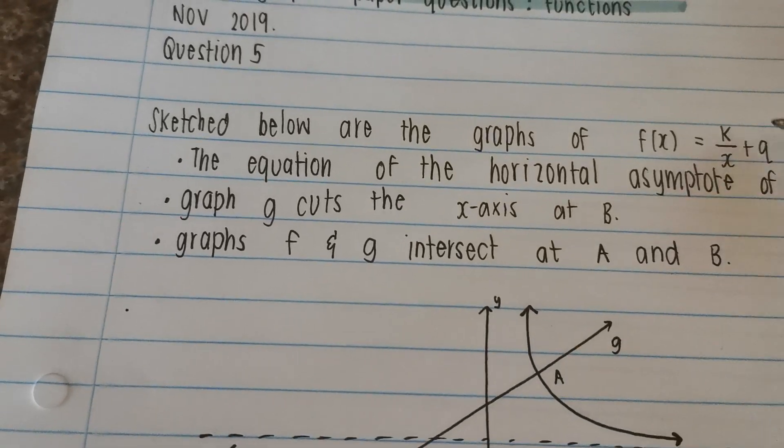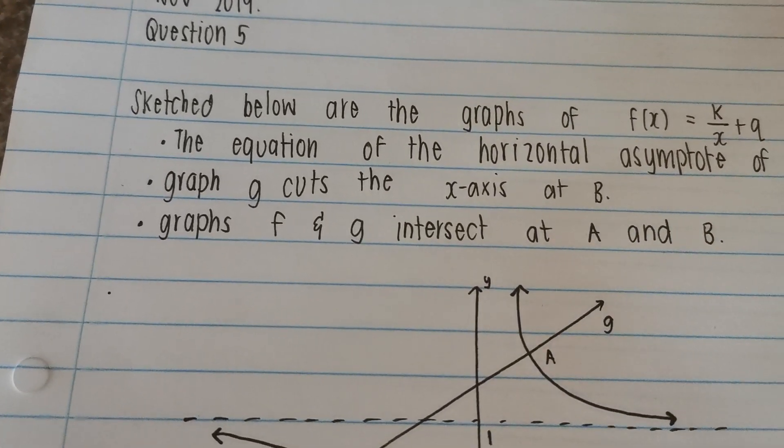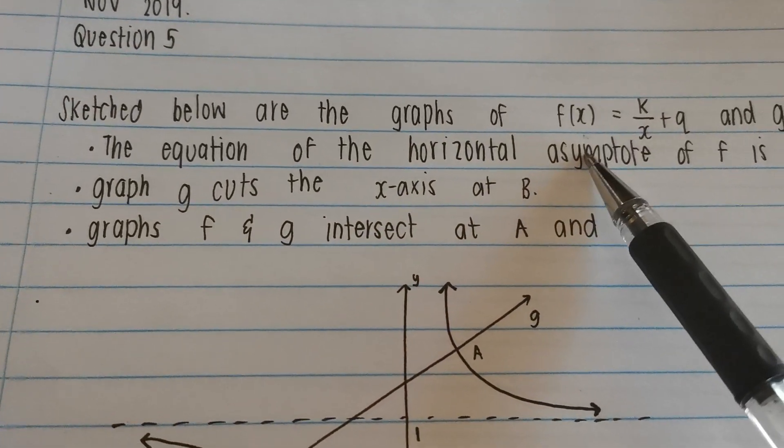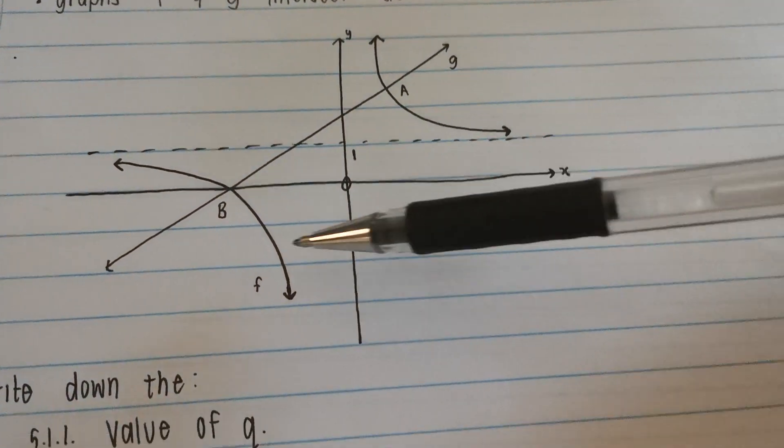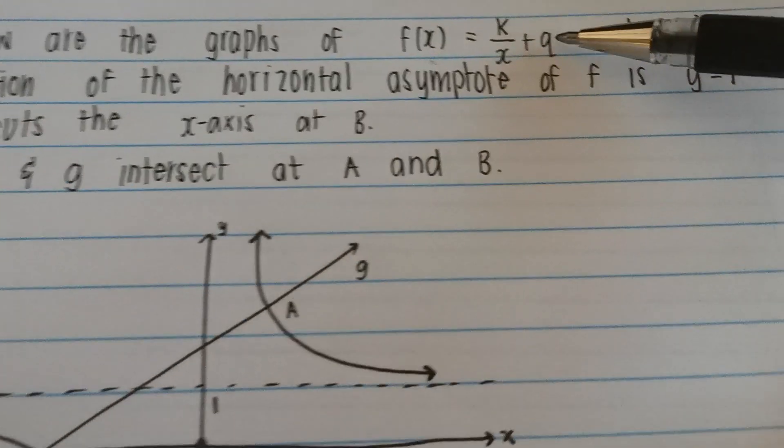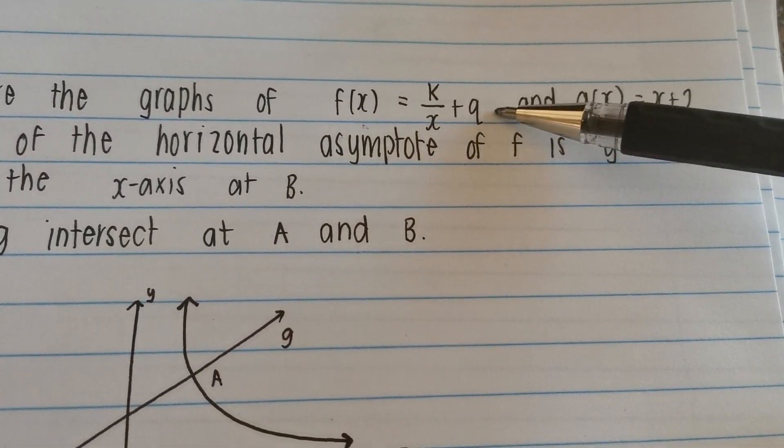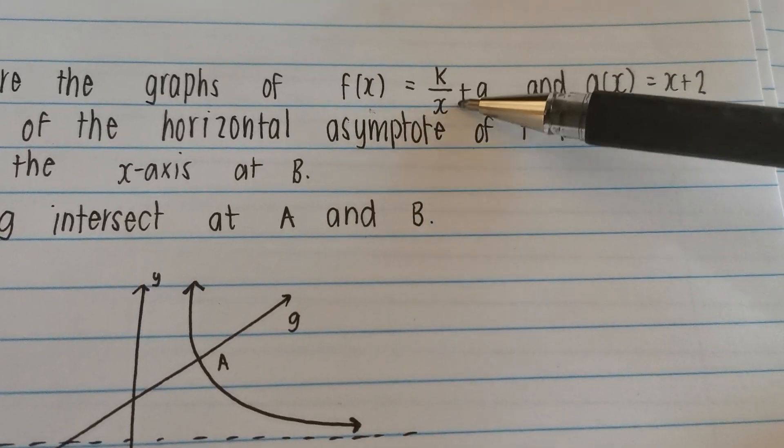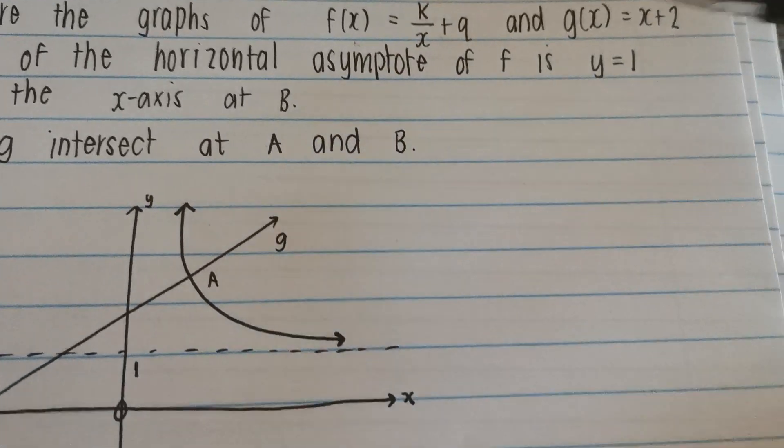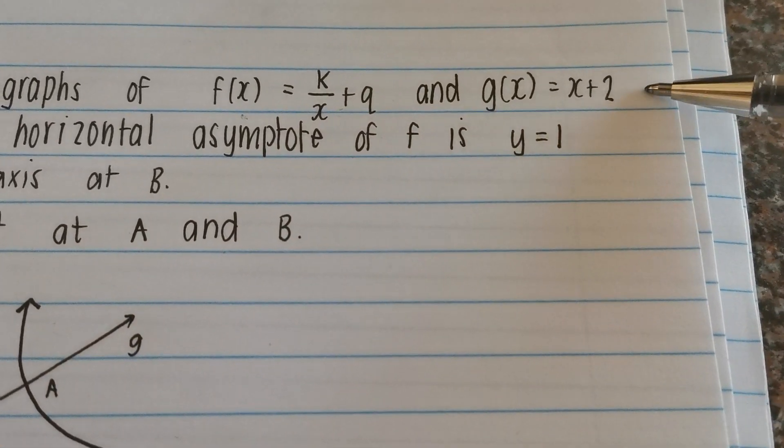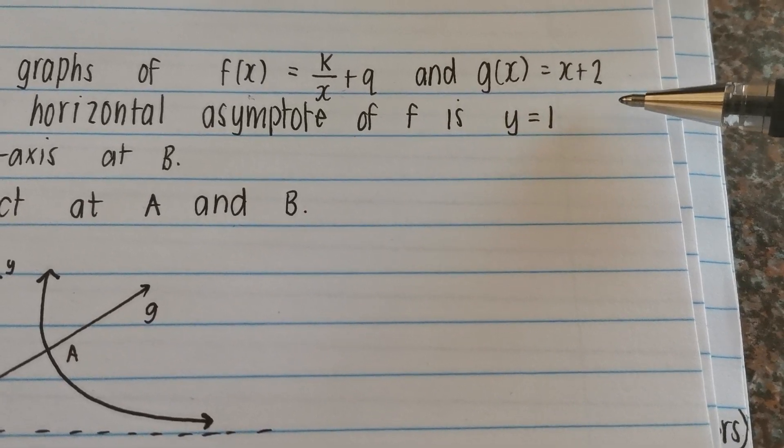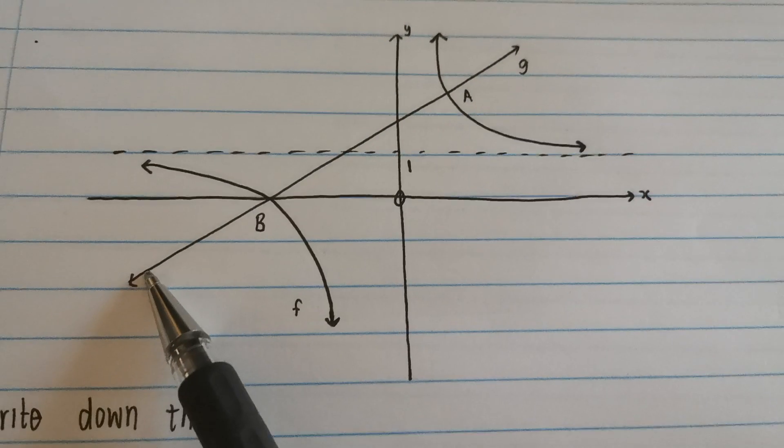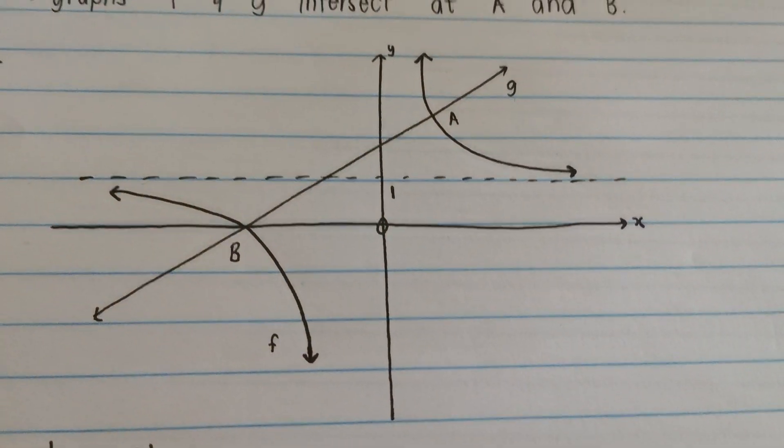You always read, step number 1, always read the paragraph that's given. It says, sketched below are the graphs of f of x. Let's just look, here's f of x, there's the name for it. And also, it's given to us as k over x plus q. So we know that when x is in the denominator, then it's going to be a hyperbola. And g of x, which is x plus 2, can you see here? It's a straight line. How do I know this? Because the power of x is 1. And let's go back there. There's a straight line drawn and there's the name for it.